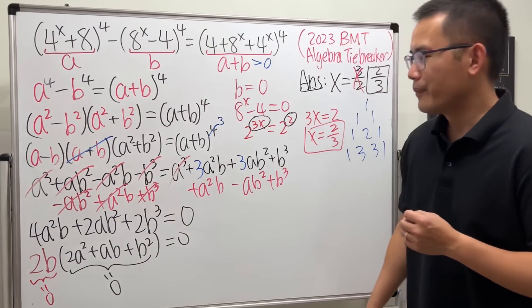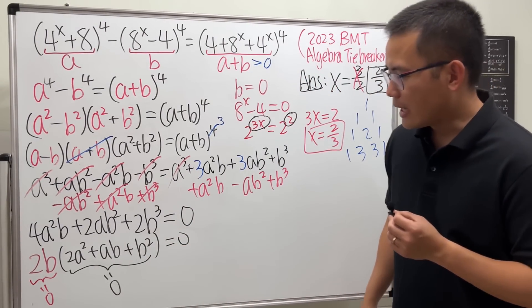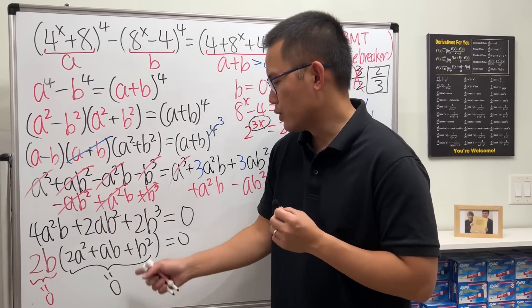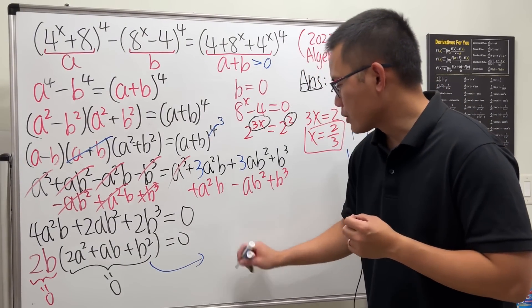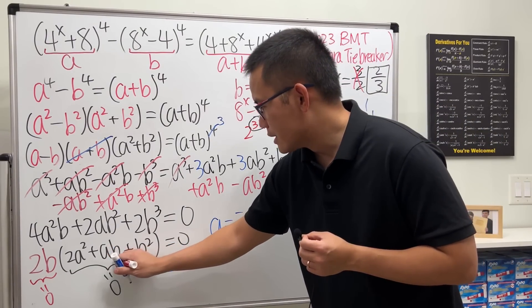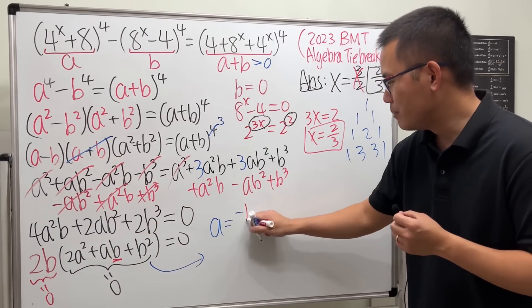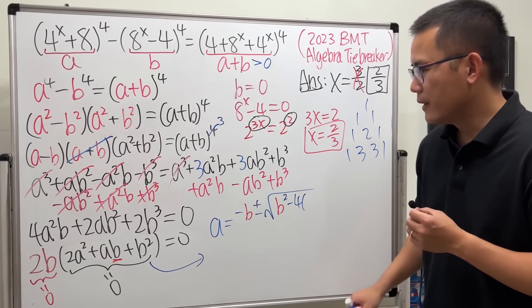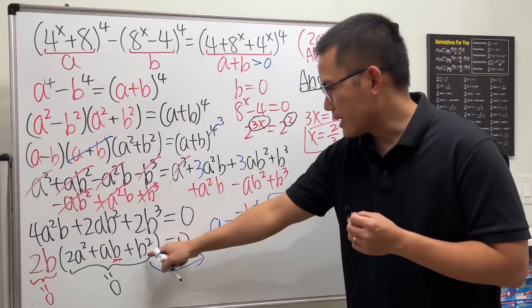Now for the other factor, 2a squared plus ab plus b squared equals zero — I'll show it's impossible to get zero here. Treating it as a quadratic in a and applying the quadratic formula gives a equals negative b plus or minus the square root of b squared minus 4 times 2 times b squared, all over 2 times 2.